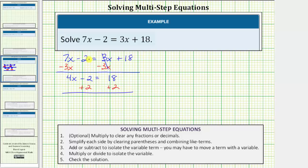On the left side, minus 2 plus 2 is zero, or negative 2 plus 2 is zero. So the left side simplifies to 4x, so we have 4x equals 18 plus 2 is equal to 20. So notice how we subtracted 3x on both sides and then added 2 to both sides in order to isolate the variable term on one side of the equation. Now we move to step four.